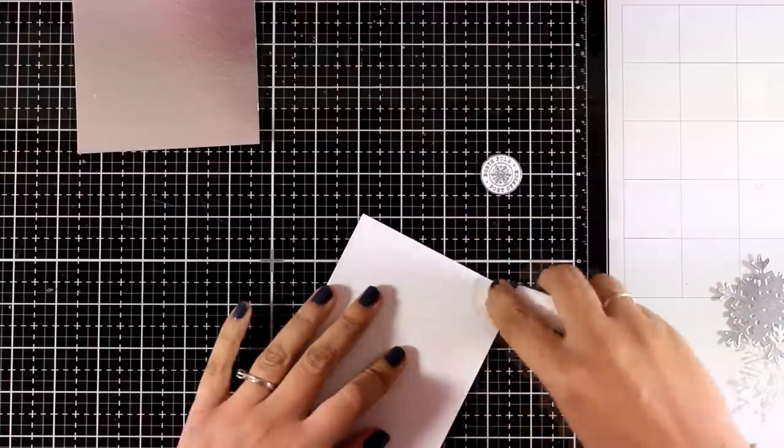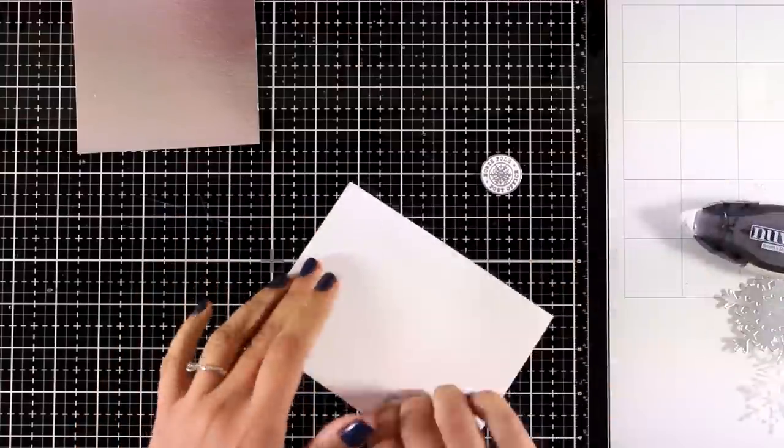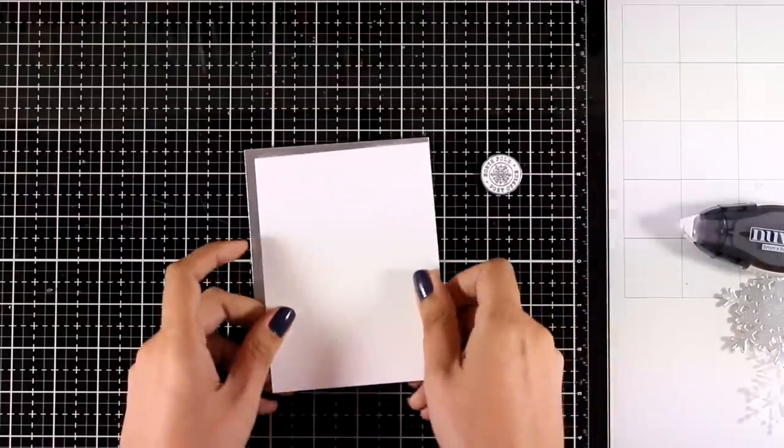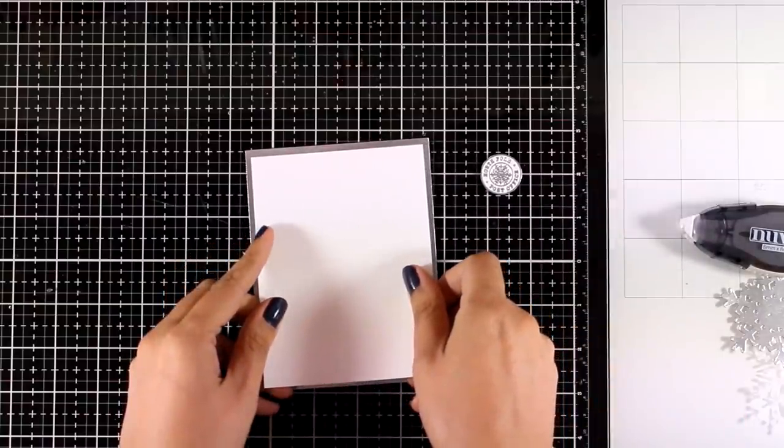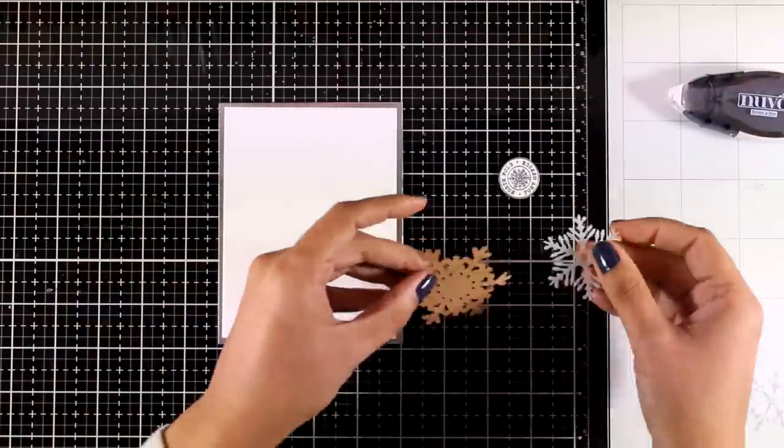So it's time to put my card together and as I said before I'm going for a very clean and simple looking card. When you want to create very elegant looking cards it's nice to go simple and white and silver create a really lovely and elegant combination.